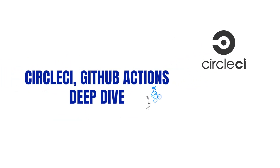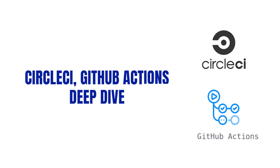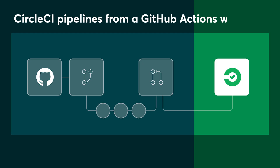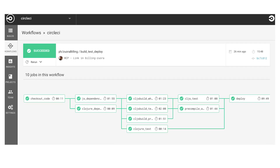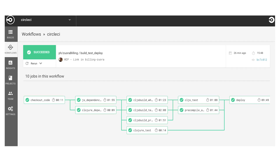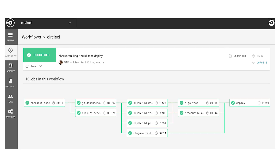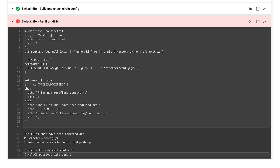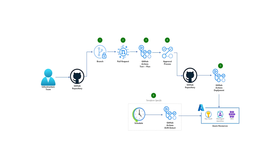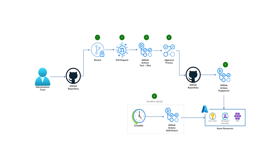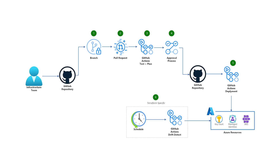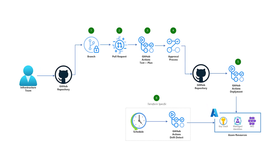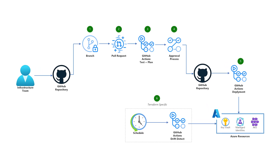Moving on, we explore CircleCI and GitHub Actions, two modern contenders that have redefined CI/CD. CircleCI's simplicity is its hallmark, providing an intuitive platform for developers to define workflows using YAML configuration. On the other hand, GitHub Actions seamlessly integrates with GitHub repositories, offering a native CI/CD solution that simplifies collaboration and automates workflows.